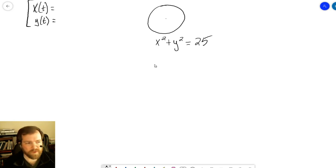So many times we'll parameterize, like, x equals r cosine theta, and y equals r sine theta.